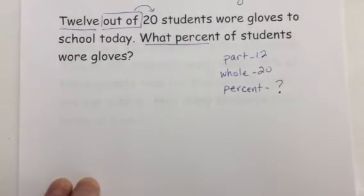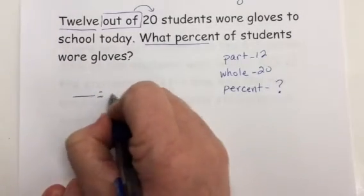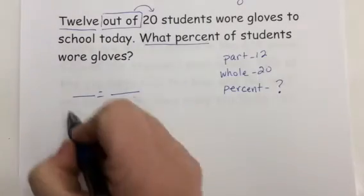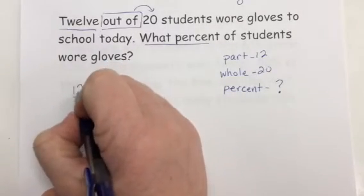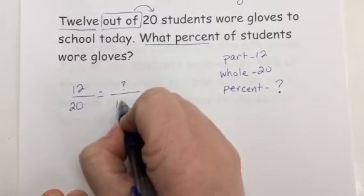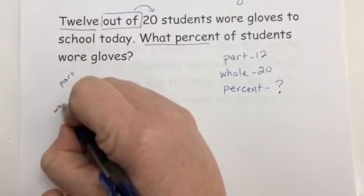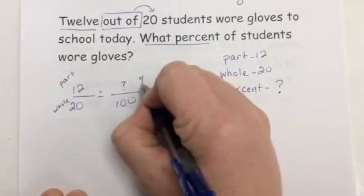So when I set up my percent proportion, that's pretty easy now. I have part over whole equals percent over 100. So 12 over 20 equals some number over 100. Okay, this is my part. This is the whole. This is my percent.